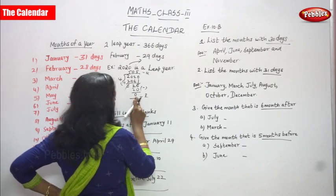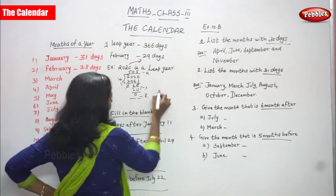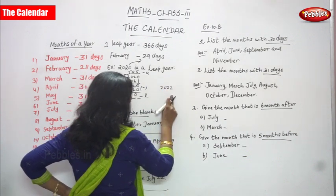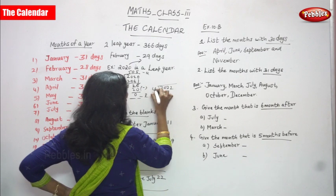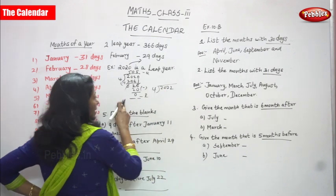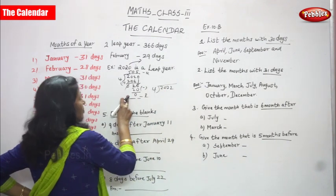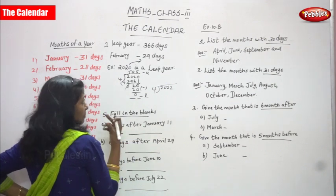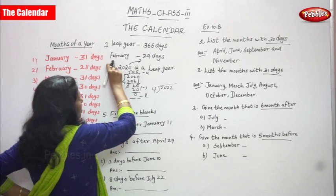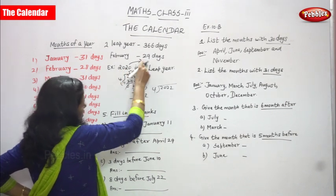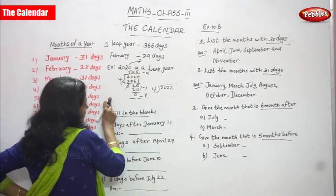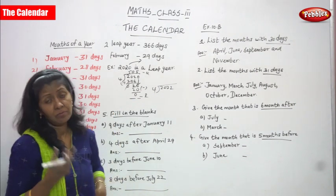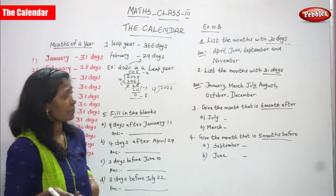If any year gives remainder 0 when divided by 4, it is a leap year. The present year is 2022. Now divide 2022 by 4 — if the remainder is 0, it is a leap year. Also, simply: if February has 29 days, it is a leap year; otherwise it is not.